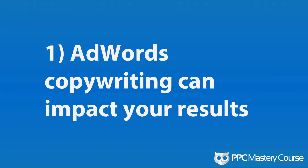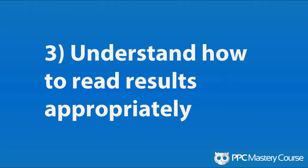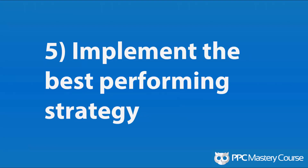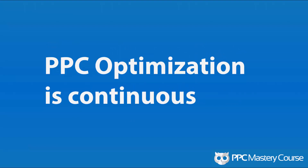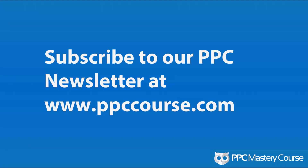My key takeaway from this lesson: AdWords copywriting can impact your results. Conduct your own experiments early and often, understand how to read the results appropriately, determine which test is the winner, implement the best performing strategy back into your campaign, and then do it again — develop your next experiment. PPC optimization is continuous; it never really stops. You're always competing against the marketplace and against Google trying to get more money from you. Ad copy is just one of the many tests you should be doing. If you love the strategy behind AdWords and making everything more effective, subscribe to our PPC course newsletter at ppccourse.com.